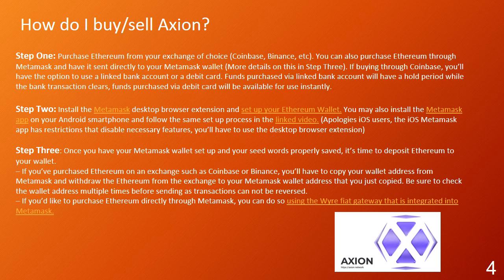You'll have to use the desktop browser extension. Step 3: Once you have your Metamask wallet set up and your seed words properly saved, it's time to deposit Ethereum to your wallet. If you've purchased Ethereum on an exchange such as Coinbase or Binance, you'll have to copy your wallet address from Metamask and withdraw the Ethereum from the exchange to your Metamask wallet address. Be sure to check the wallet address multiple times before sending, as transactions cannot be reversed. If you'd like to purchase Ethereum directly through Metamask, you can do so using their wire/fiat gateway integrated into Metamask.